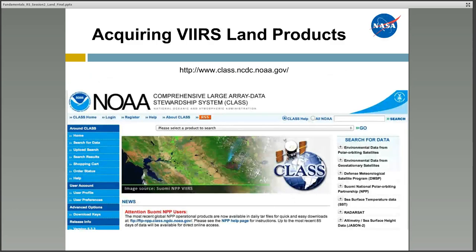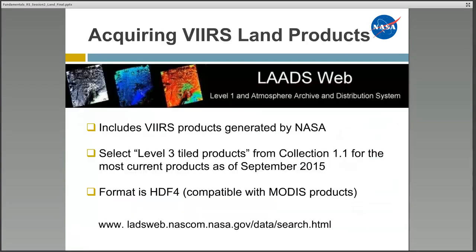To find VIIRS products, you can search the Comprehensive Large Array Data Stewardship System, hosted by NOAA, which provides access to many different data products in addition to VIIRS. All VIIRS land products can also be acquired from the Level 1 and Atmospheric Archive and Distribution System, or LAADS Web, which includes the most recent products generated by NASA in HDF4 format.